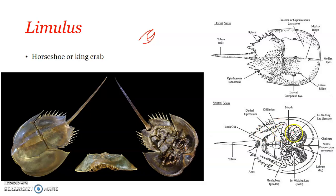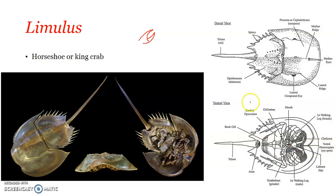There are six pairs of appendages associated with the prosoma. Dorsally, the prosoma is associated with a pair of lateral eyes and a pair of median eyes. The prosoma is dorsally covered by a thick, armor-like carapace. Regarding the opisthosoma, that is the abdominal region: